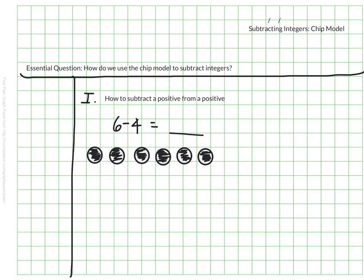So with my chip model I would start with 6 black chips, and if I want to subtract that means I'm trying to take away. Which means if I want to subtract 4 positives I would need to take away 4 black chips, and on this model it's hard to take away, so I'm just going to X them out. So I would take away 1, 2, 3, 4 black chips, and I would be left with 2 which are black, which means my answer is a positive 2. Which of course we knew, but we just want to see it with this model.